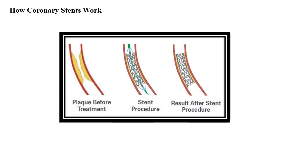During the procedure the cardiologist will place the stent over a thin long tube with a balloon tip called a catheter and insert it into an artery in your arm. Once the stent reaches the clogged artery, the doctor will inflate the balloon to expand the stent to the desirable size to open the clogged artery, then deflate it and remove the balloon. The stent stays in place permanently to decrease the chance of narrowing again.